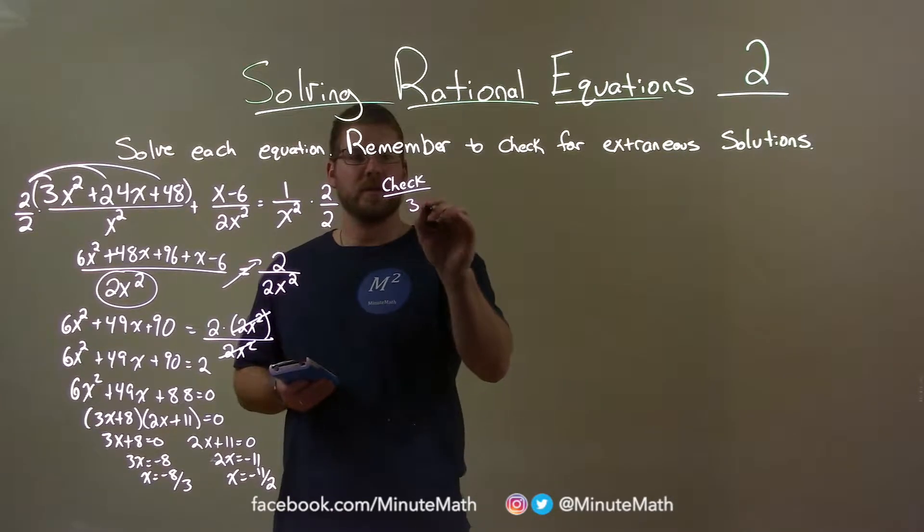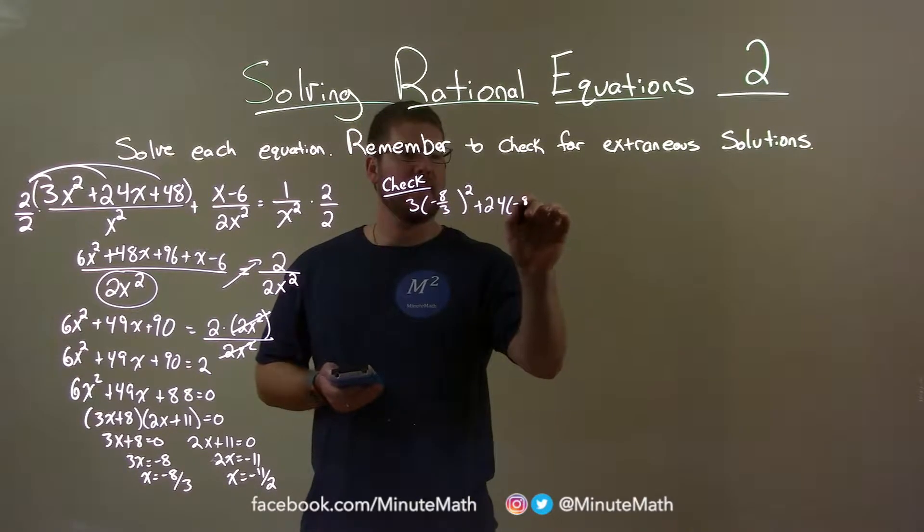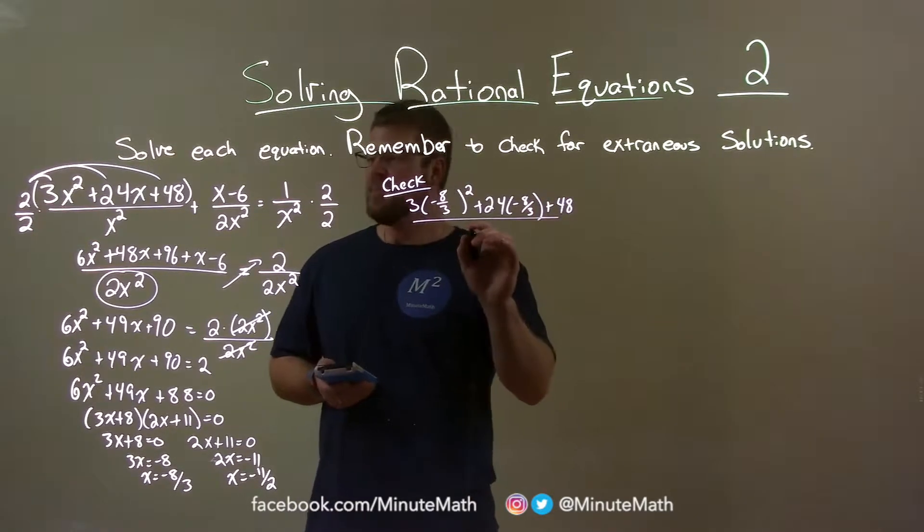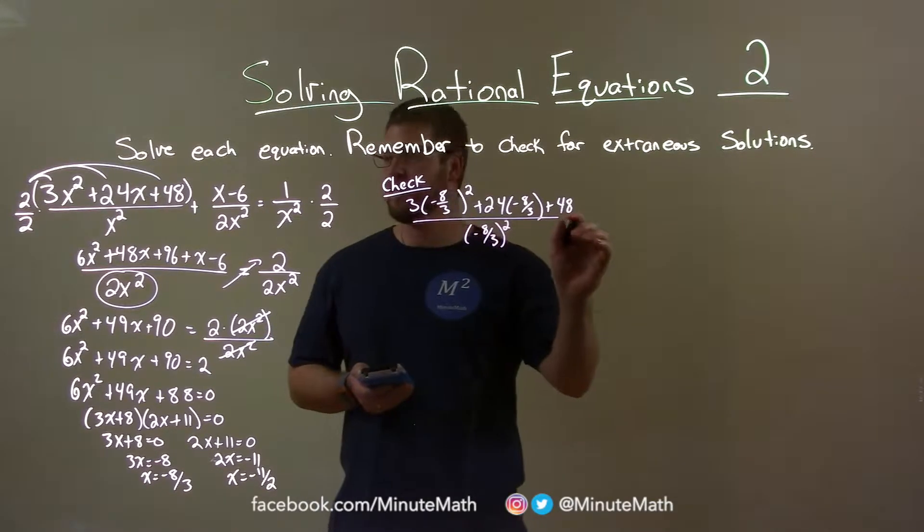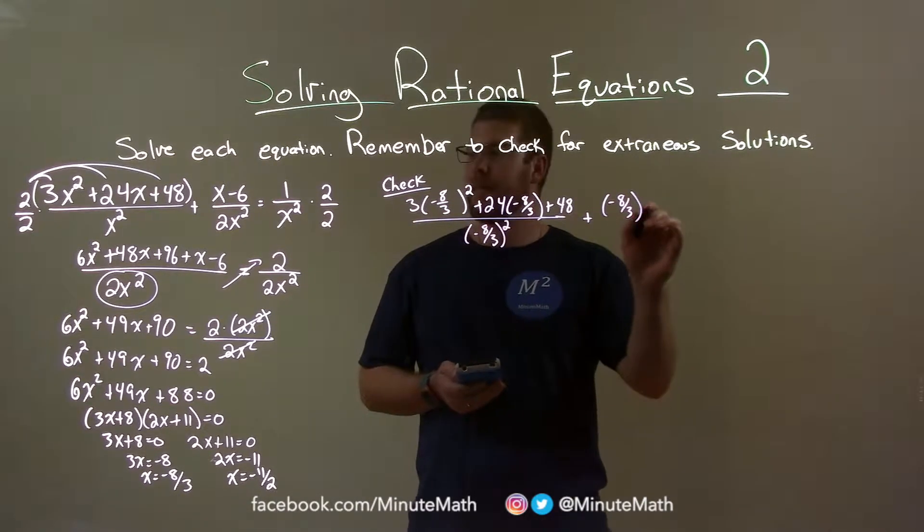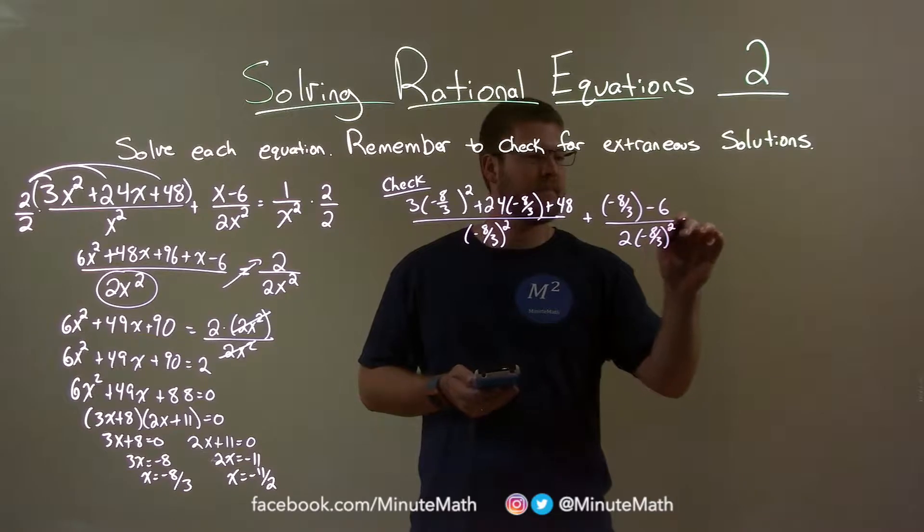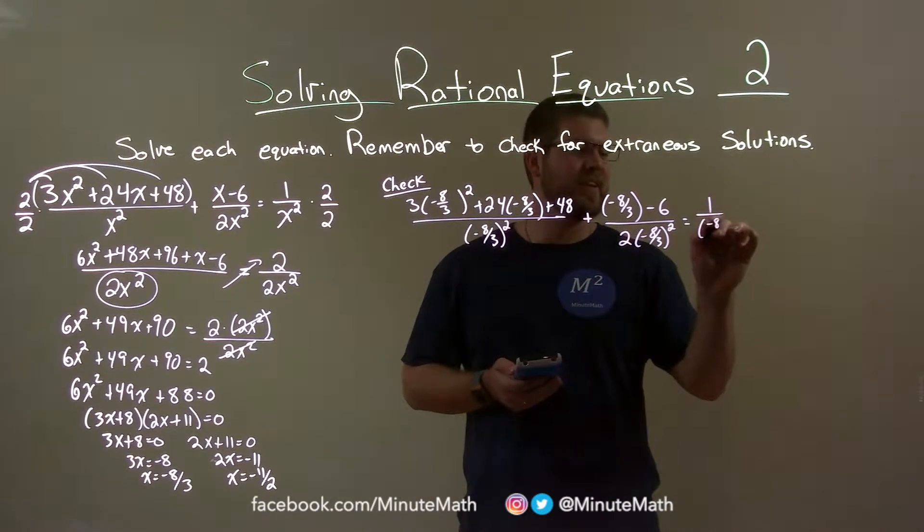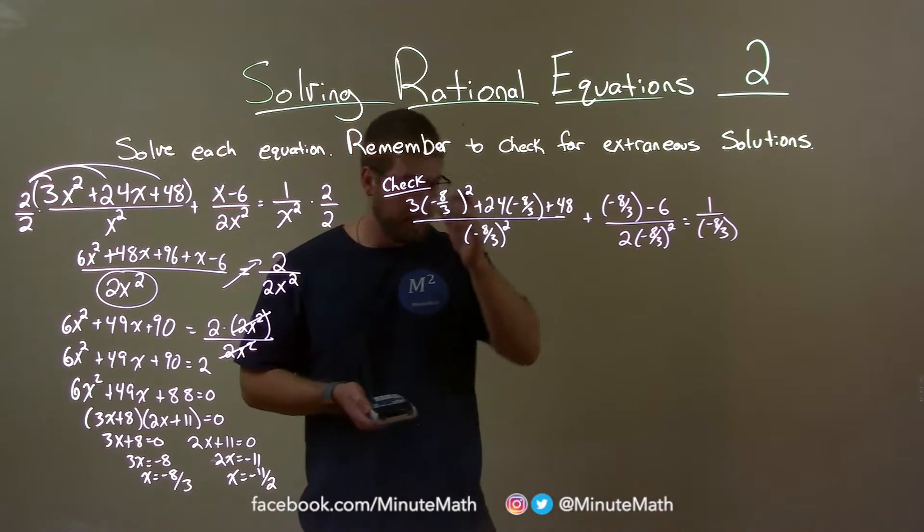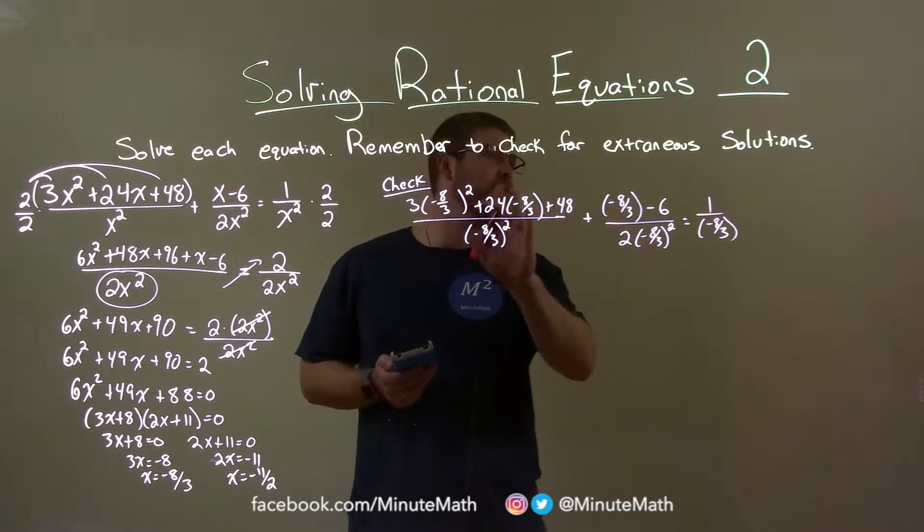The first part here: 3 times negative 8 thirds squared plus 24 times negative 8 thirds plus 48 over negative 8 thirds squared, plus negative 8 thirds minus 6 over 2 times negative 8 thirds squared is equal to 1 over negative 8 thirds squared. We're going to see if the left and right hand side are equal. If they are, this is a true solution. Let's simplify. I'm running out of space, so I'll do all in one step here for this whole numerator.